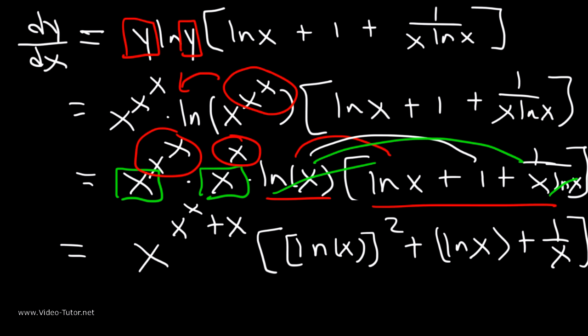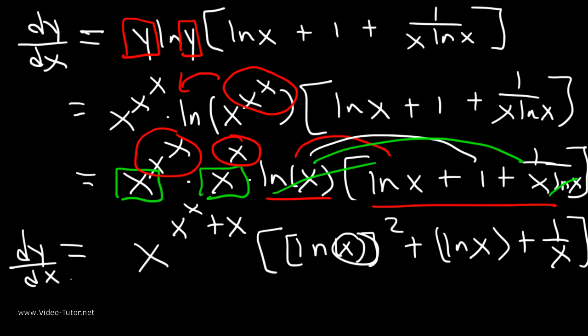This is as far as we can go. We can't move the 2 in ln²(x) because it applies to the entire ln(x), not x alone. So this is our final answer. The derivative of x^(x^x) is x^(x^x + x) times (ln²(x) + ln(x) + 1/x).